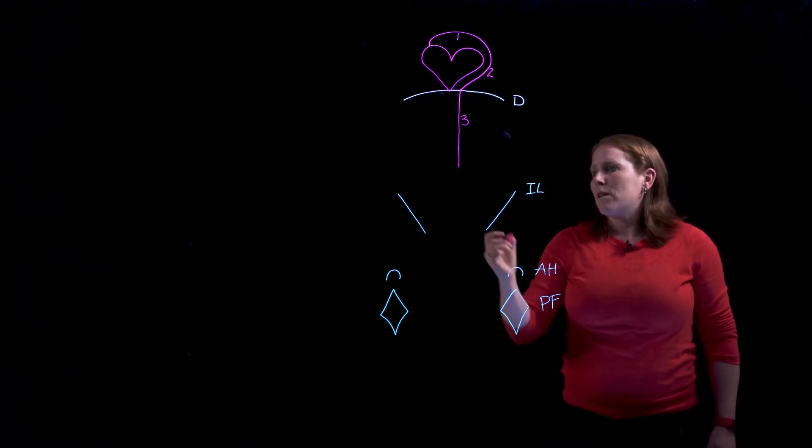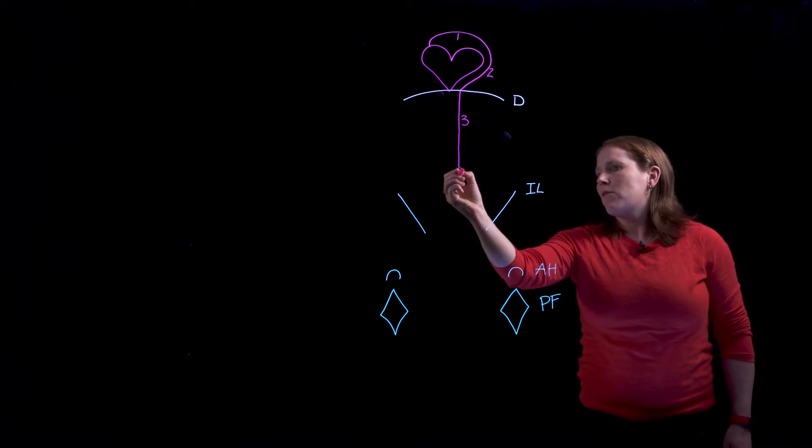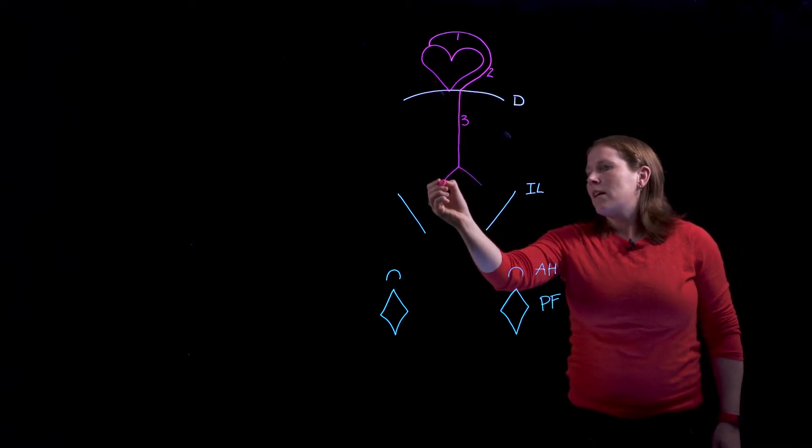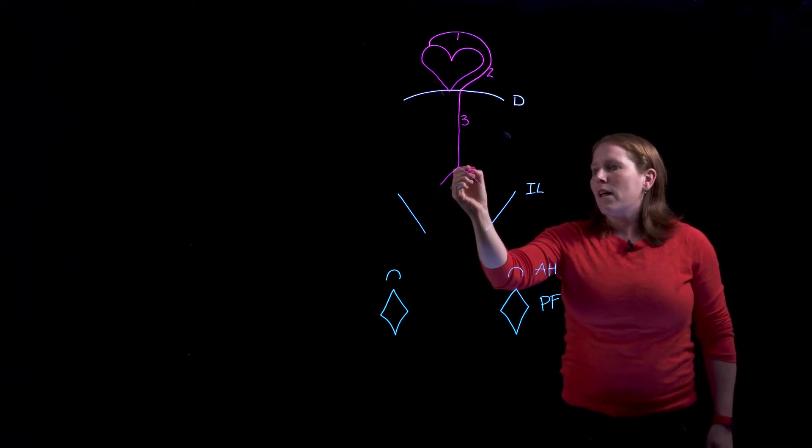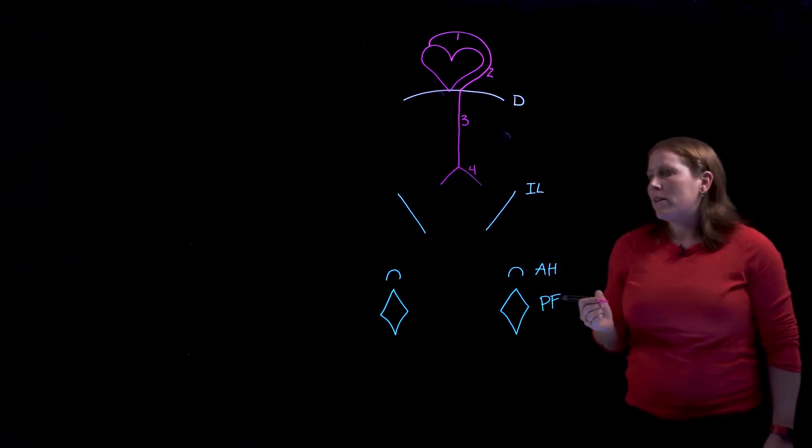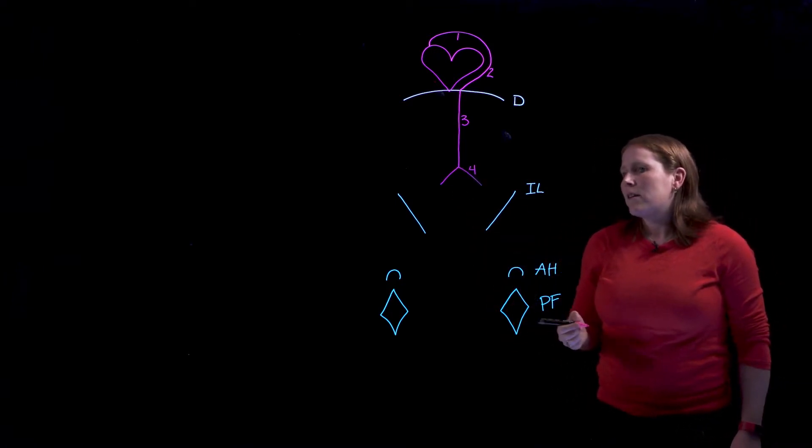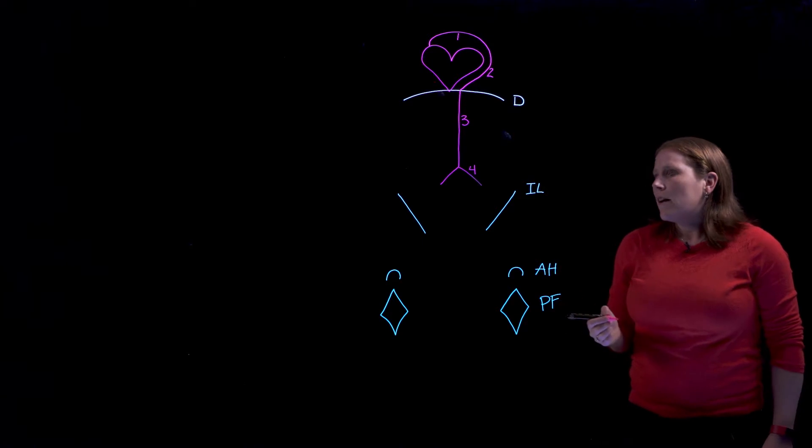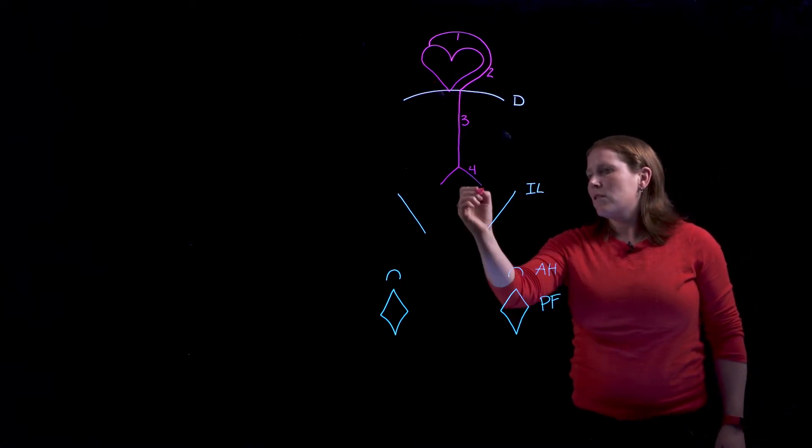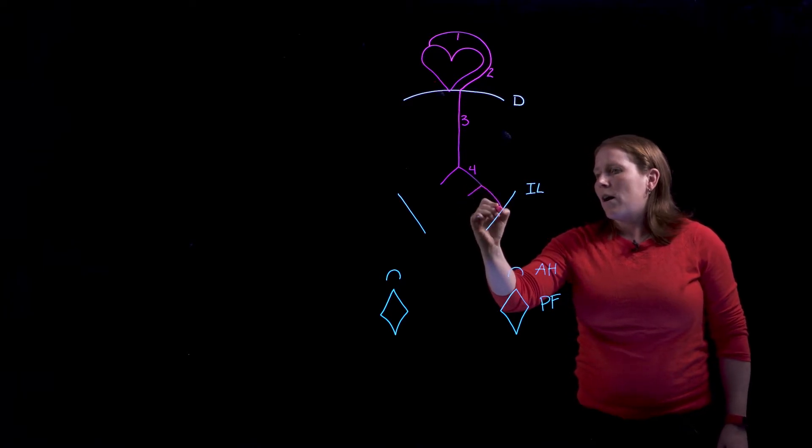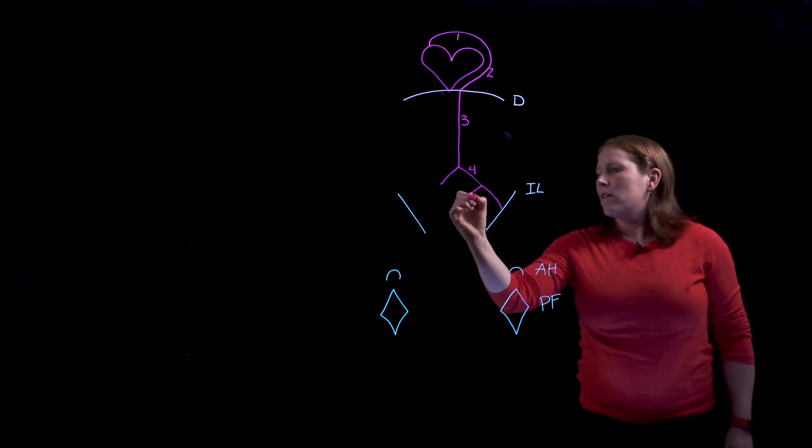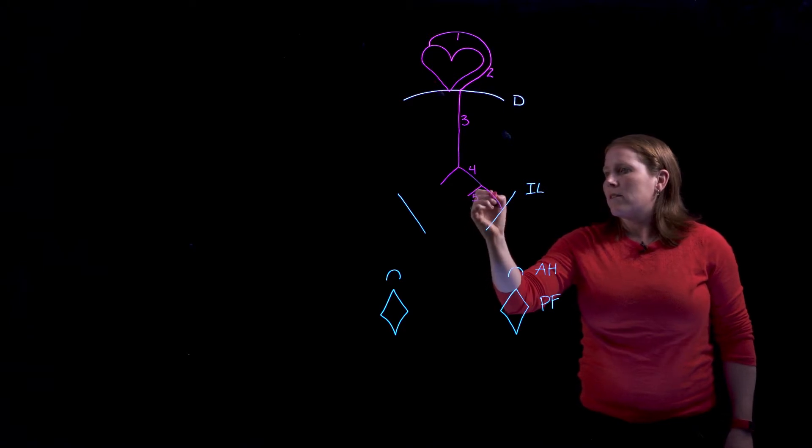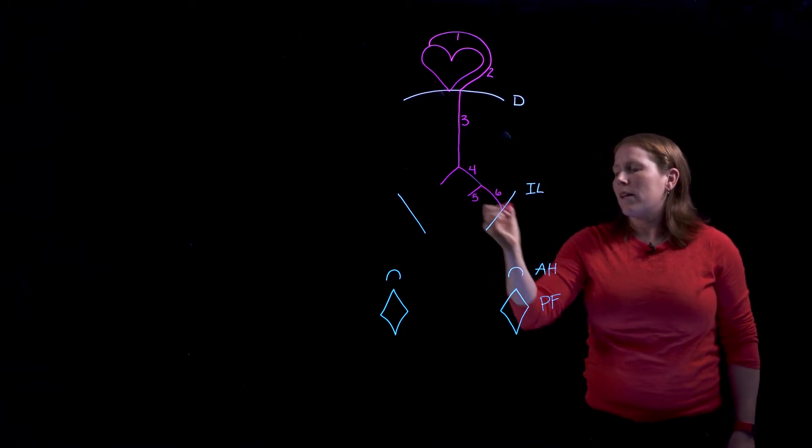And around the L4 vertebral level the abdominal aorta is going to split into left and right common iliac arteries. The word common tells us this artery is going to split again, and it does so almost immediately on each side into our internal and external iliac arteries.